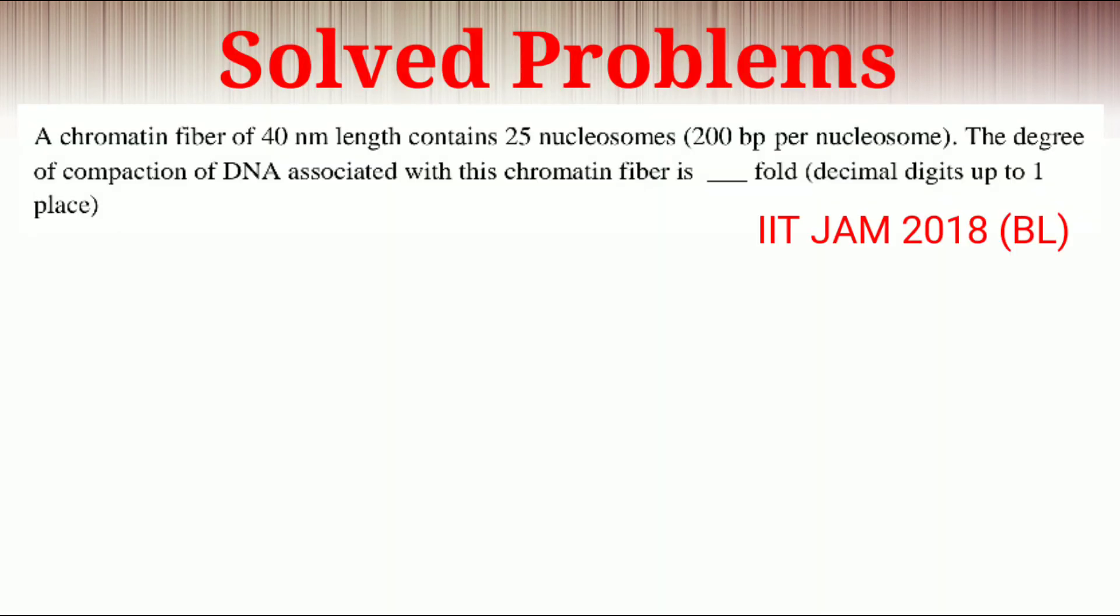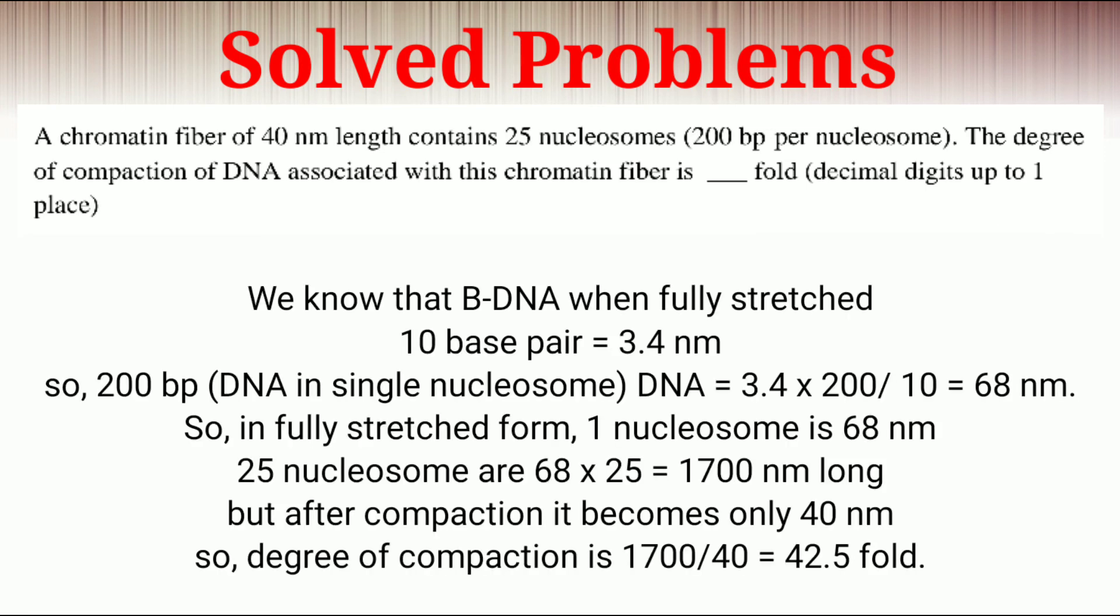Now in this problem, we will observe how many fold it is compacted in nucleosome. Here, length of 25 nucleosome is 40 nanometer. We know that when B-DNA is fully stretched, 10 base pair is 3.4 nanometer. So 200 base pair is 68 nanometer. And in fully stretched condition, the size of the one nucleosome is 68 nanometer. For 25 nucleosome, it is 1700 nanometer. But after compaction, it becomes only 40 nanometer. So the degree of compaction is 42.5 fold.